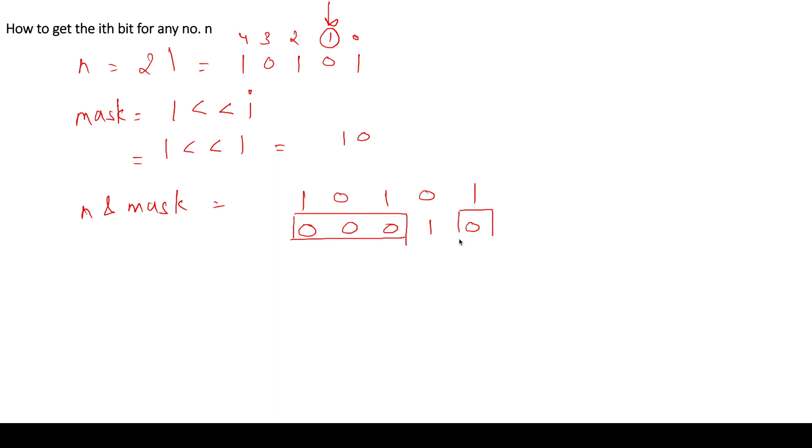For AND to be 1, for a particular bit to be 1, both the bits should be 1. So actually the dependency is only over here. So in case this is 0, we are going to get a 0 and in case it is a 1, we are going to get not equals to 0 or we can say greater than 0. So we can say that in case n AND mask, in case this value is equal to 0, we can say that the current bit, the ith bit in n is actually 0 and otherwise it is 1. So this is how we check for the ith bit in a given number n.